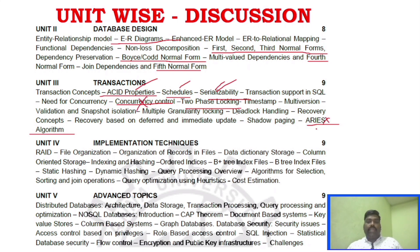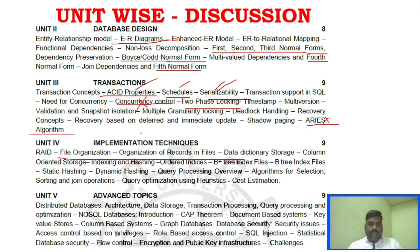Two-phase locking and ARIES are key areas in Unit 3. For Unit 4, file organization and organization of records in files are scenario-based questions. Hashing - static and dynamic hashing - are the key areas in Unit 4.